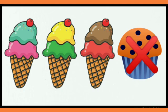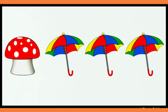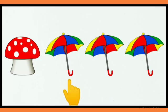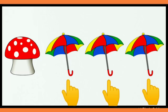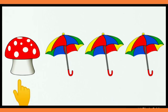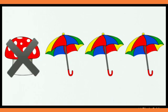Very good! Now what do we have over here? A mushroom, an umbrella, this is also an umbrella and there is one more umbrella. So children, which is same in this? Yes, the umbrellas are same. And what is different? Correct! The mushroom is different.